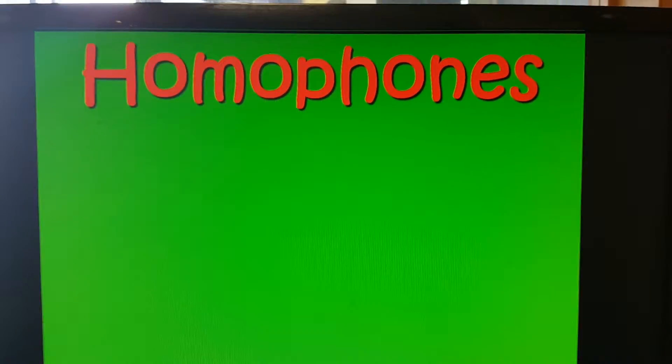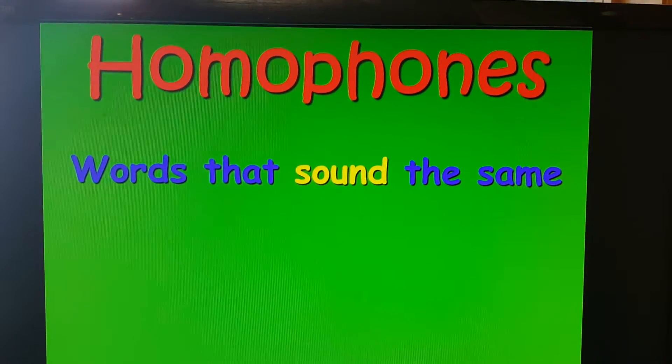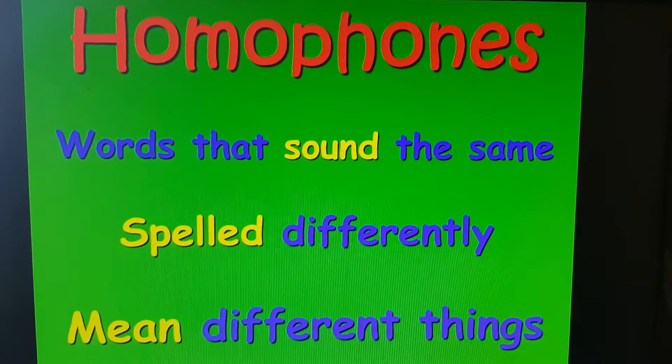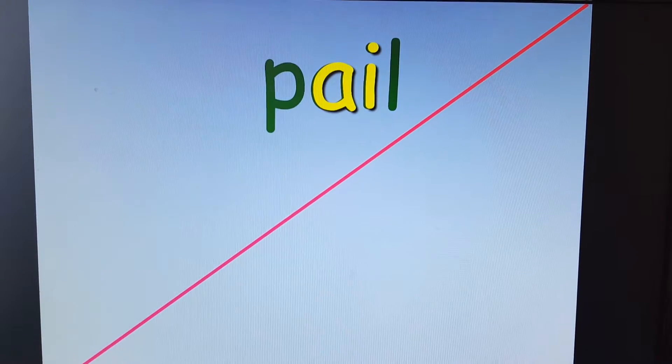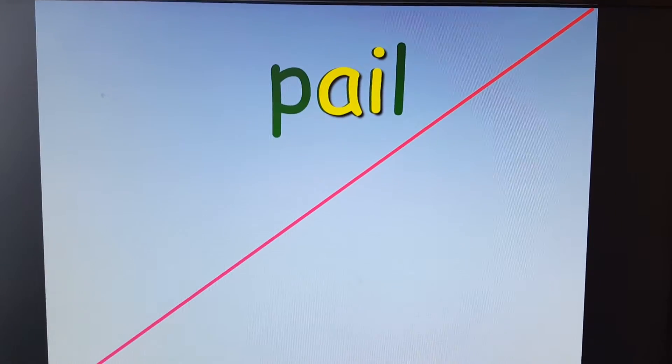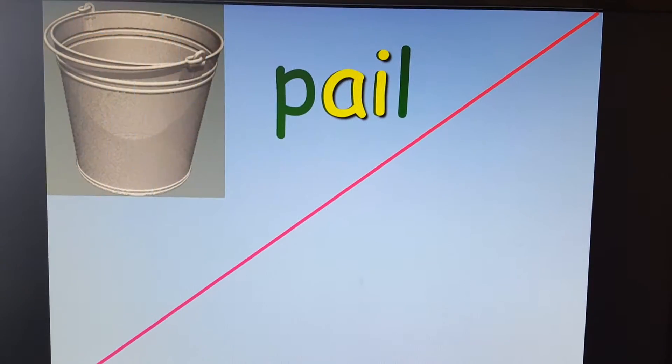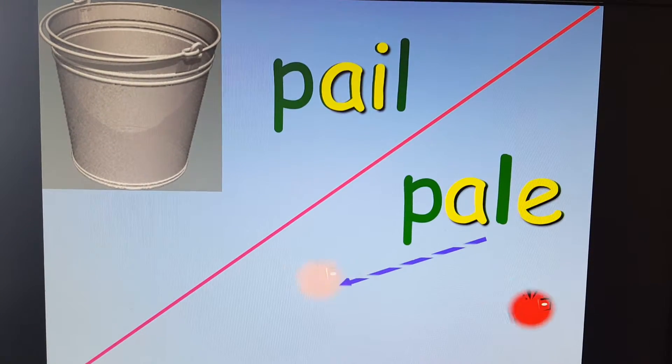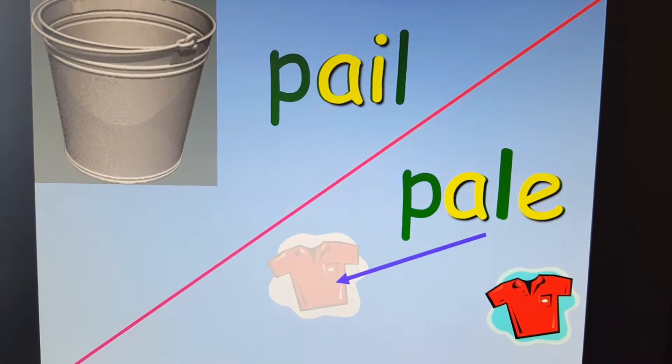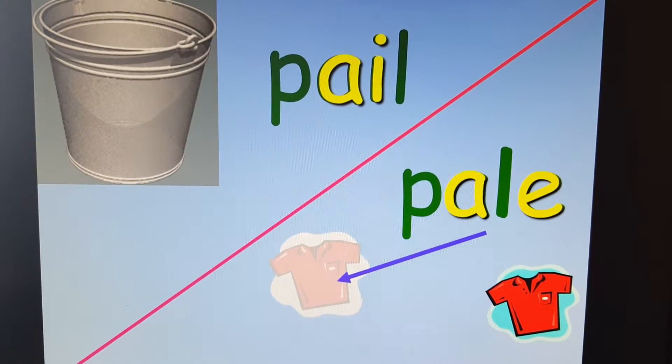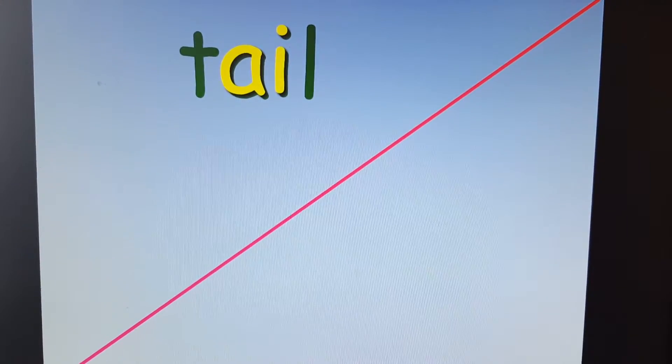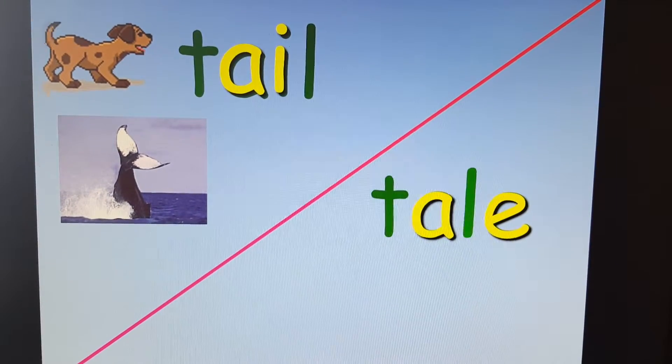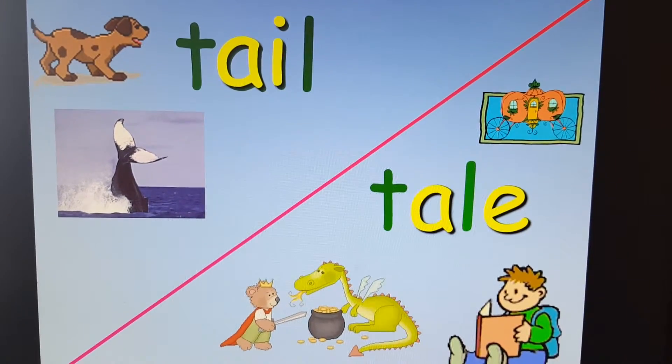All right. Homophones. Words that sound the same. They're spelled differently and they mean different things. Are you ready to try with long A spellings? The word's going to sound exactly the same. Pale. A pail is a bucket. Or look at that. Pale. That shirt is pale red. It's not bright red. It's pale red. All right. How about, sure. Tail. The tail of a dog. Or look at that spelling. Still says tail. A fairy tale.